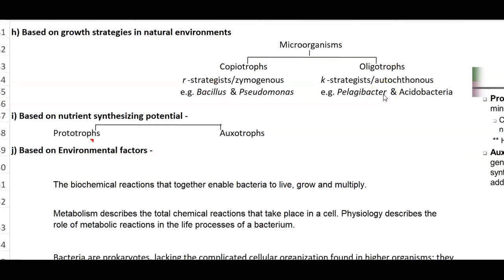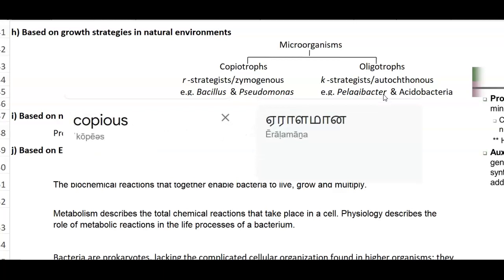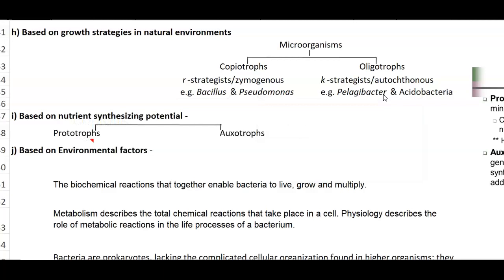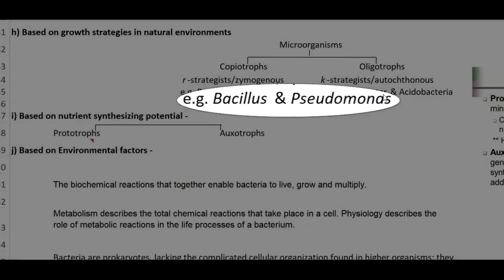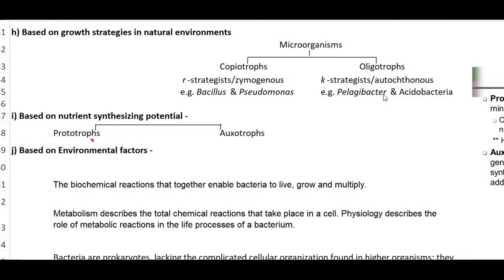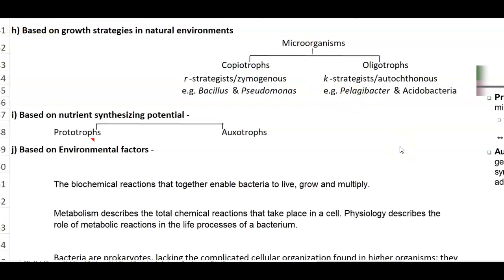The next classification relates to microbial growth in the natural environment. Microbes are divided into copiotrophs and oligotrophs. Copiotrophs, also called R-strategists or zymogenous bacteria, multiply rapidly when substrate is available in surplus. Oligotrophs, also called K-strategists or autochthonous bacteria, maintain a constant population regardless of substrate availability. Examples of oligotrophs include Pelagibacter and Acidobacteria, a dominant phylum in soil.